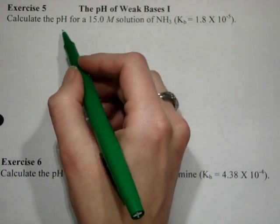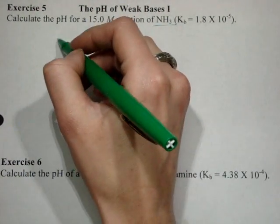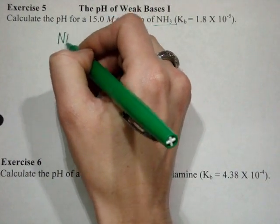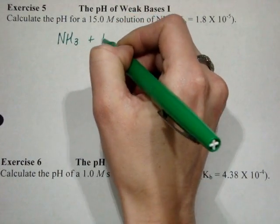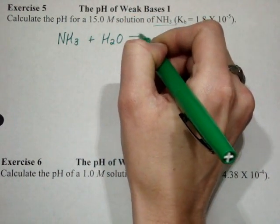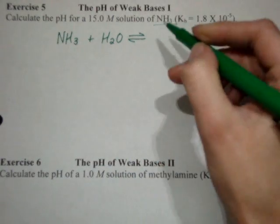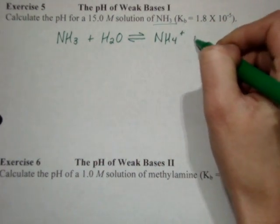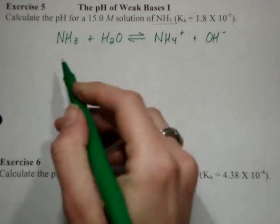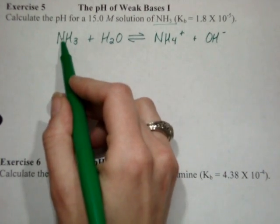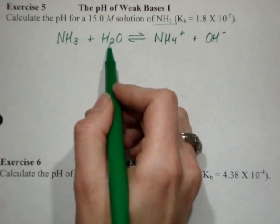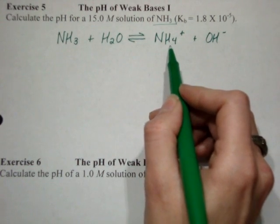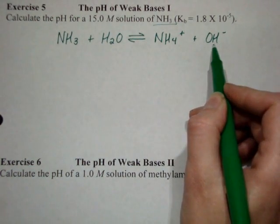So for our first example, we're going to start off with NH3, so we still need an equation. It's a little bit more important to include the water in the base equations so that you can actually see the hydroxide form. Ammonia is acting as the base, so it's going to steal a hydrogen ion from the water, making it NH4+ and then hydroxide here.